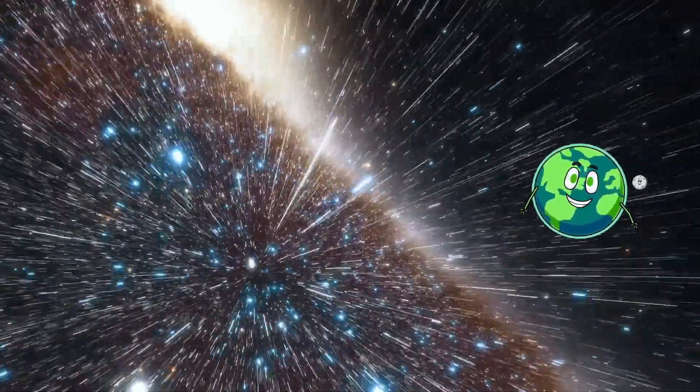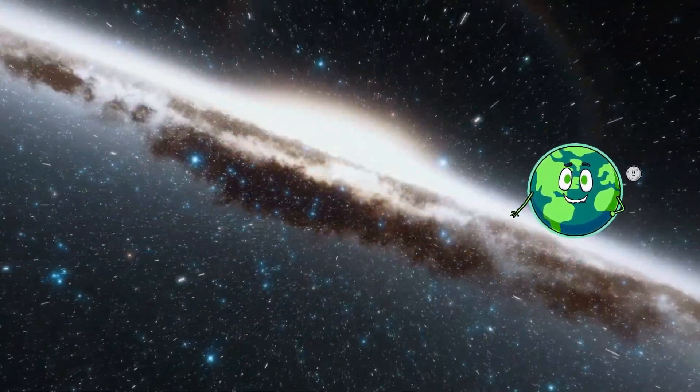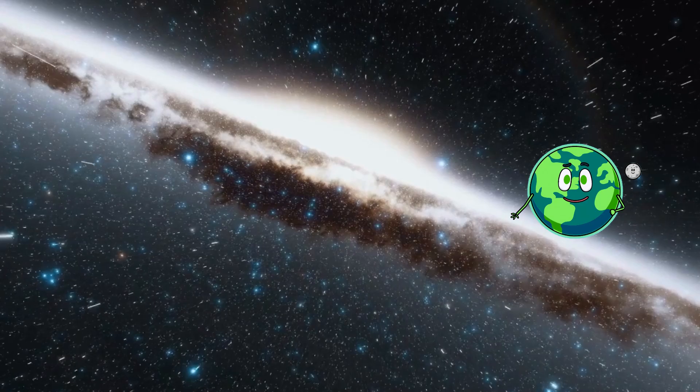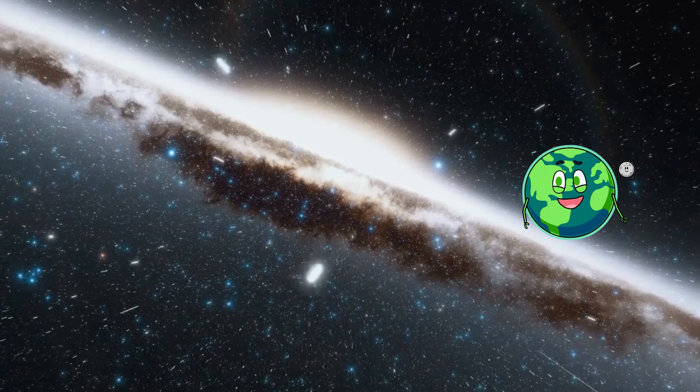Andromeda is about 2.5 million light-years away from us. That means, even at light speed, it would take us 2.5 million years to get there. That's so far away that it's hard to even imagine.